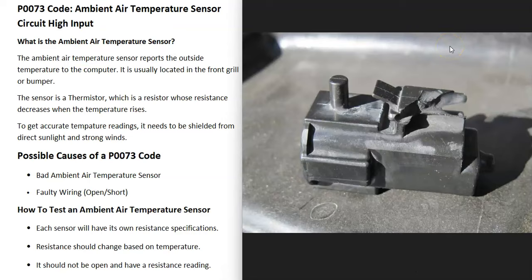Many people, when they get this code, just automatically swap out that ambient air temperature sensor. And then if that doesn't work, they start checking the wiring. But you can test that sensor if you want to.